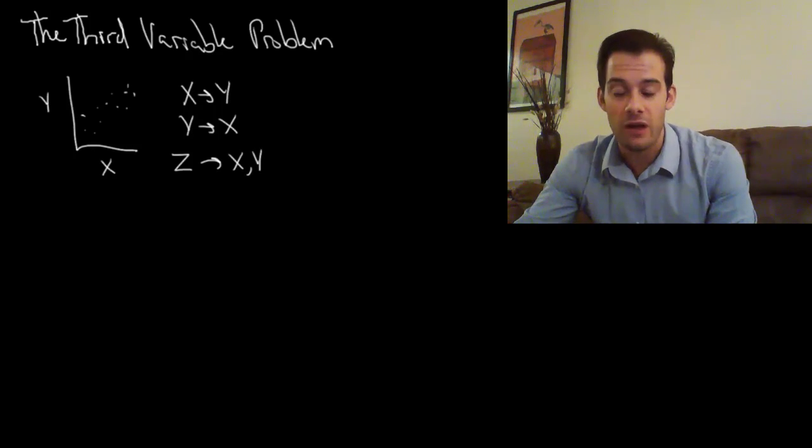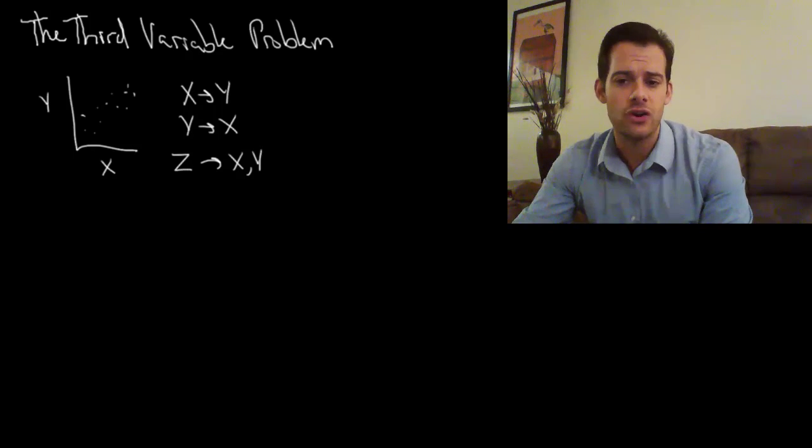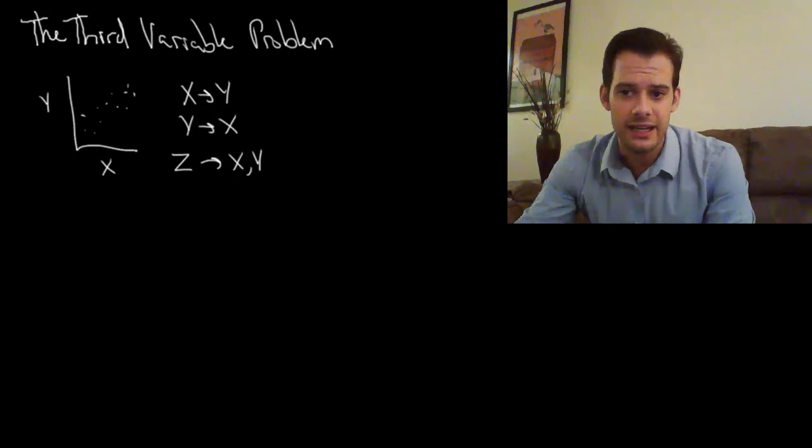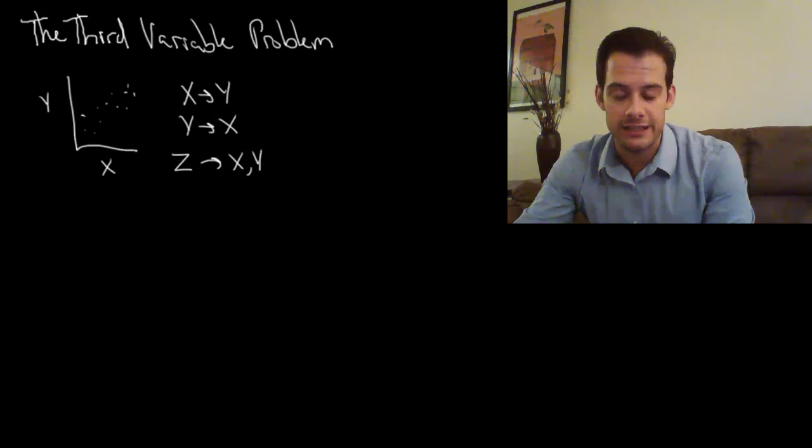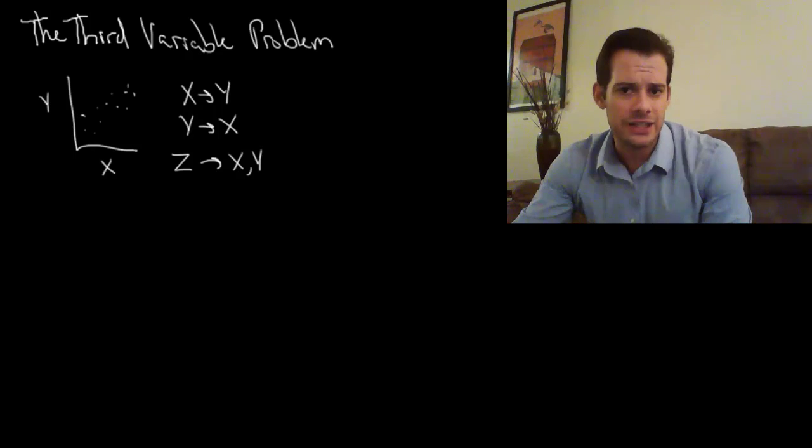So z is some other third variable that I didn't measure. I only measured two things and it could be a third thing that wasn't in my study that's influencing both of the things I measured. The problem we have is that this possible third thing is infinite. It could be anything. So let's look at an actual example of this.